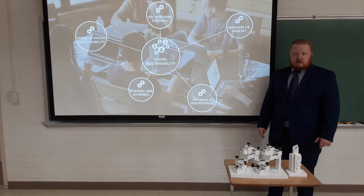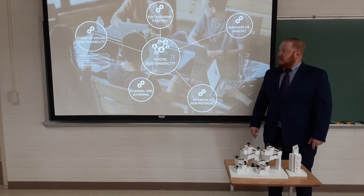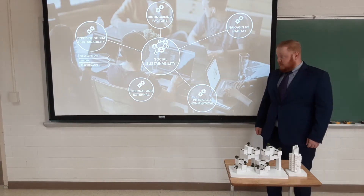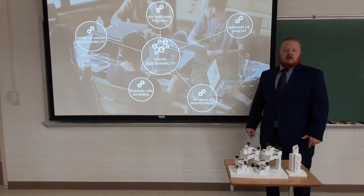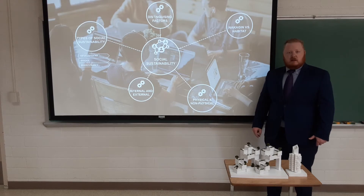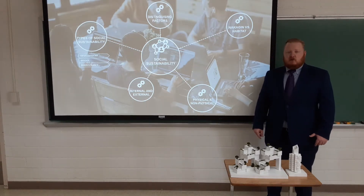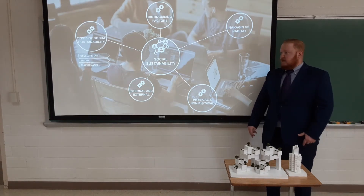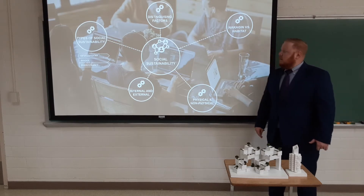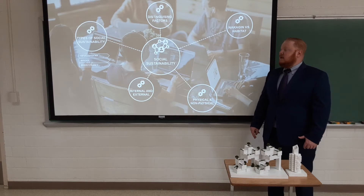Social sustainability can be broken down into three general types: development sustainability, bridge sustainability, and maintenance sustainability. Development sustainability has to do with how we think about sustainability when designing a building — things incorporated into the design on the front end. Bridge sustainability is how we maintain those sustainable effects as our needs change. One example is historical buildings being repurposed from what may have originally been a library or town meeting hall into something like a meeting space or a bar.